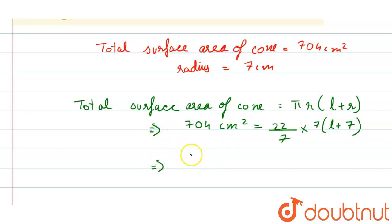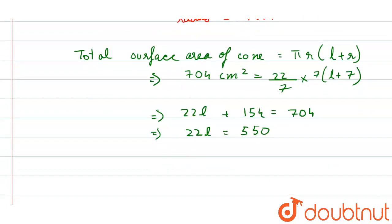So simplifying further, we will get the values. We have total surface area of cone that is equal to 22 l plus 154 equals to 704. So that is equals to 22 l equals to 550.